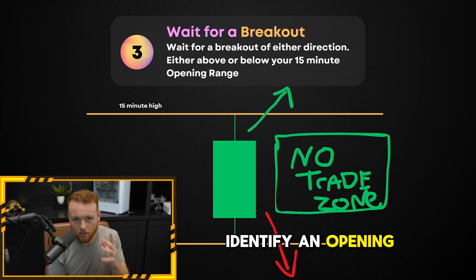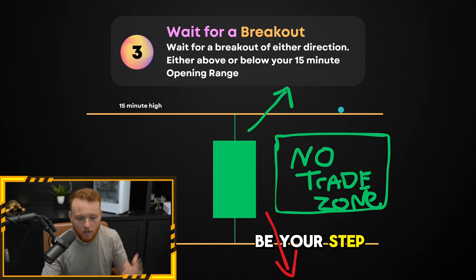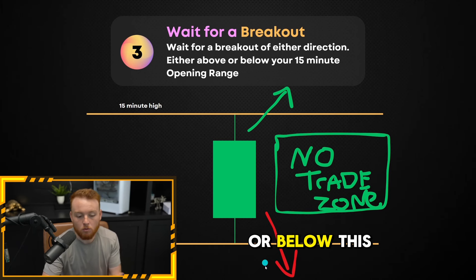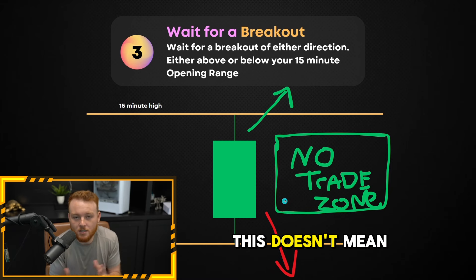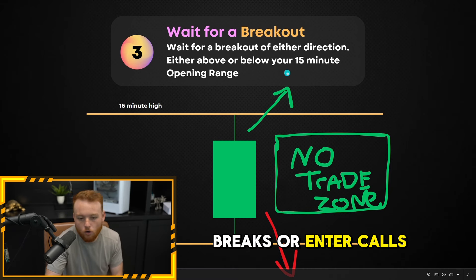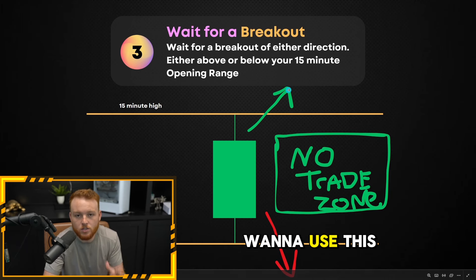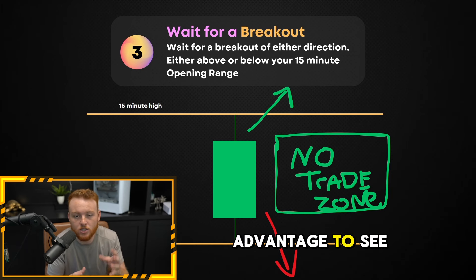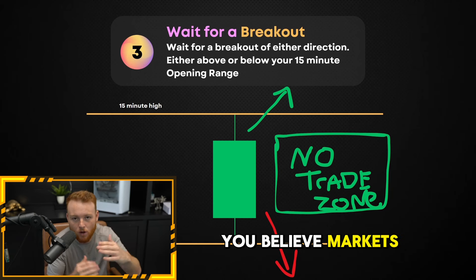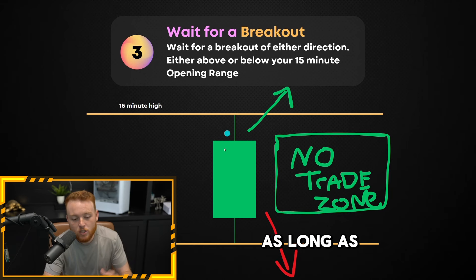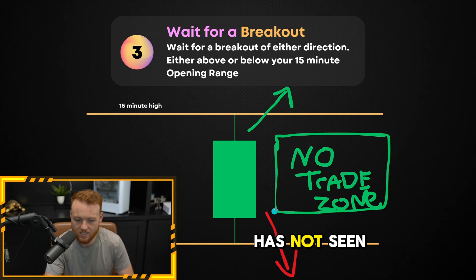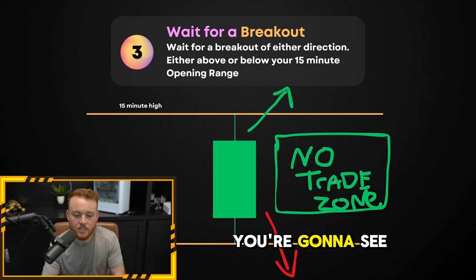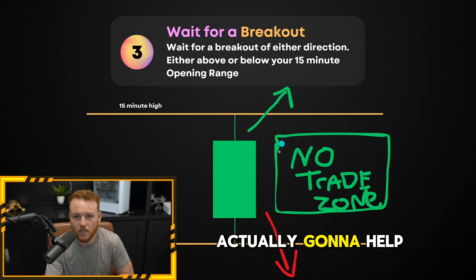Step three: once you see a breakout above or below this 15-minute opening range, that's where you're going to change your daily bias. This doesn't mean just enter puts as soon as it breaks or enter calls as soon as it breaks. You want to use this opening range breakout to see what the overall bias on the day is. As long as we are trading within this 15-minute opening range, you want to stay away — that is a no-trade zone.